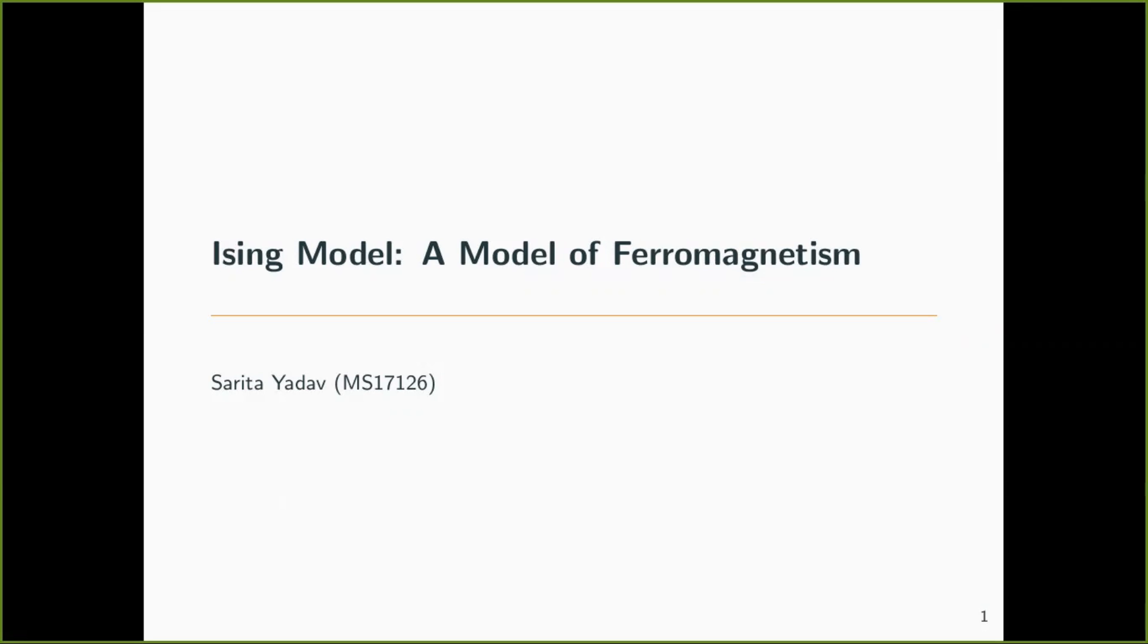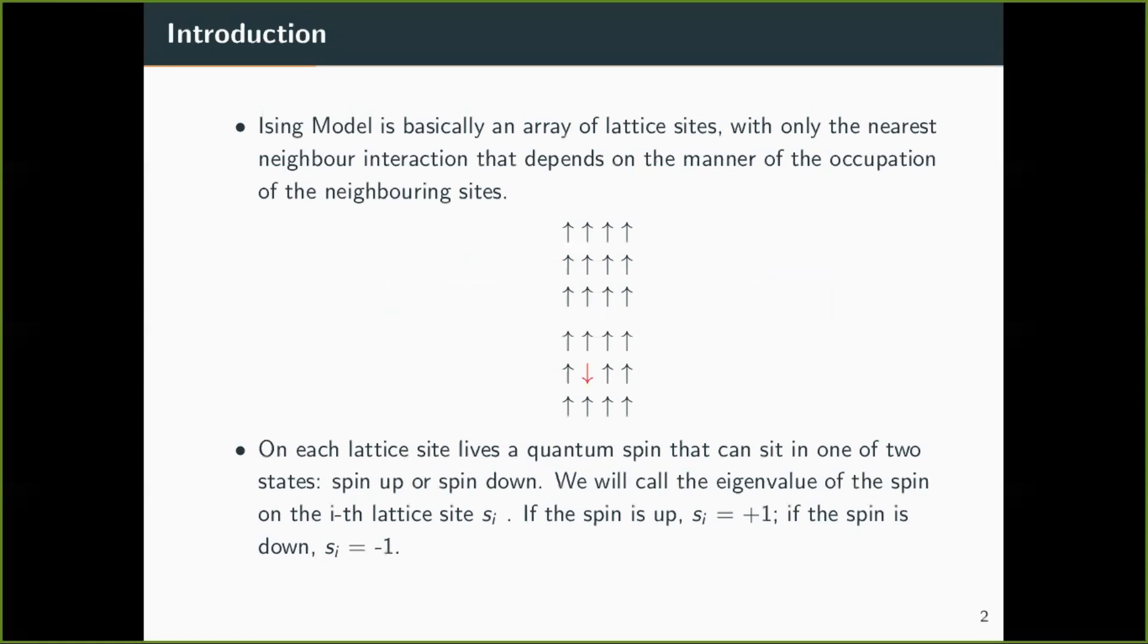So the very first question that we can ask is what is an Ising model? Ising model is basically an array of lattice sites with only the nearest neighbour interaction.